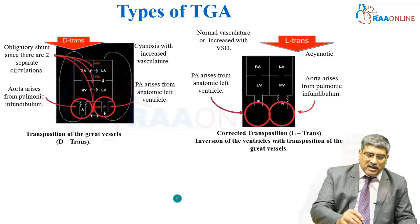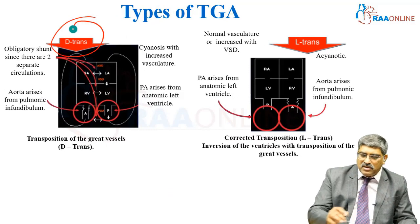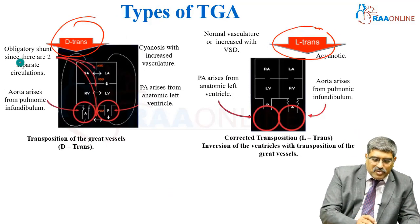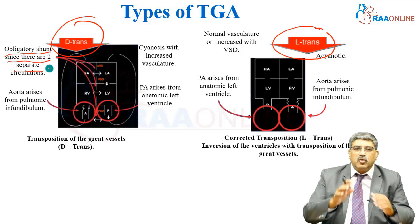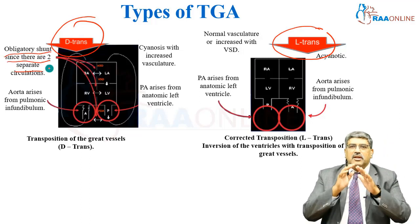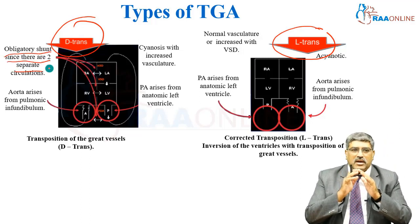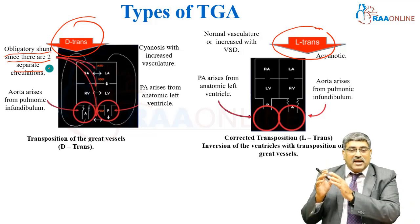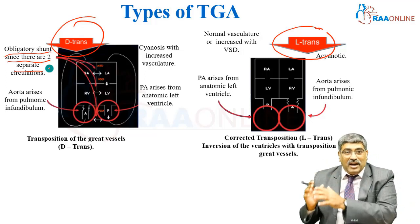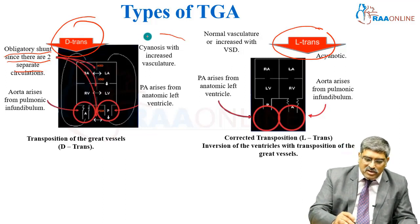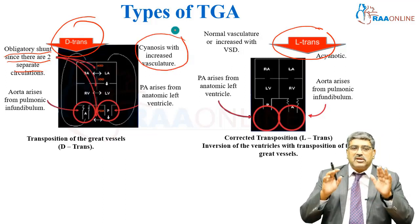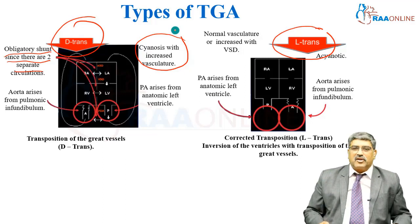In D-transposition, there are obligations because of two parallel circulations. The aorta rises from the right ventricle and the pulmonary artery rises from the left ventricle. What is very important is there is cyanosis with increased vasculature.